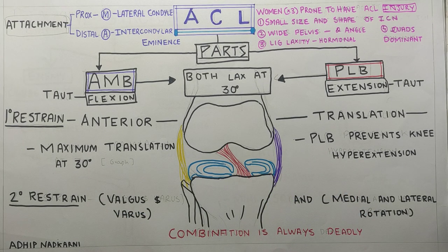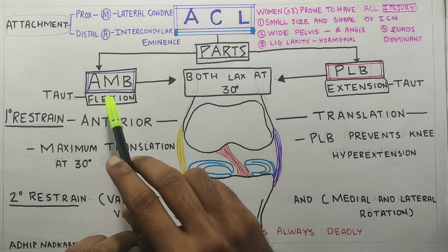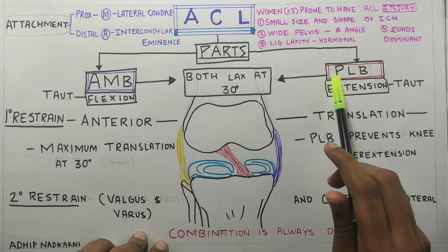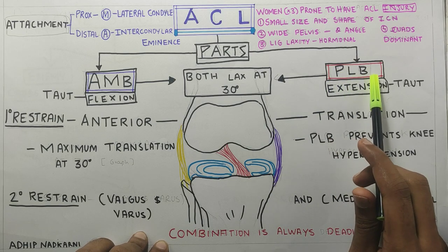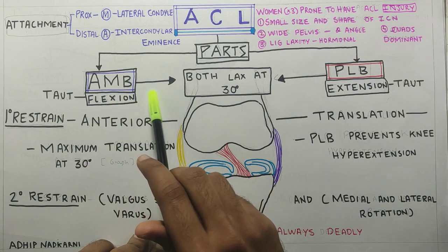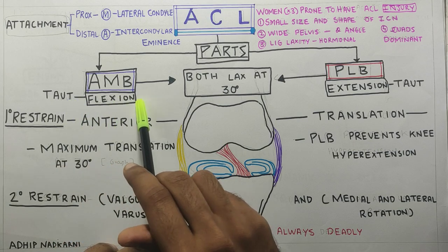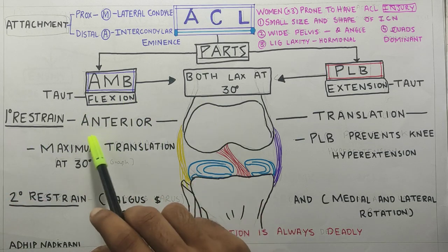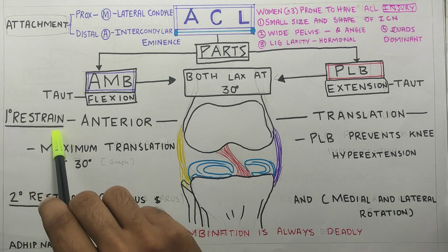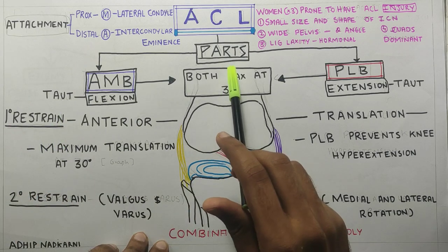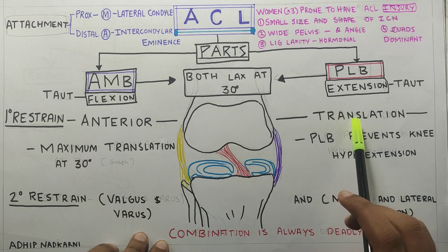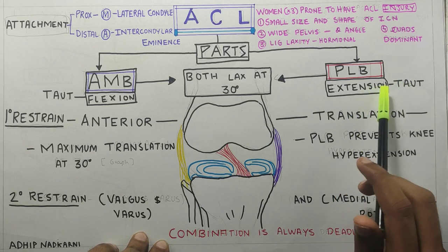ACL has the AMB, that is the anterior medial band, and the PLB, that is the posterior lateral band. The anteromedial band becomes taut in flexion and it prevents anterior translation — that is the primary restraint of ACL. The posterior lateral band prevents anterior translation in extension.